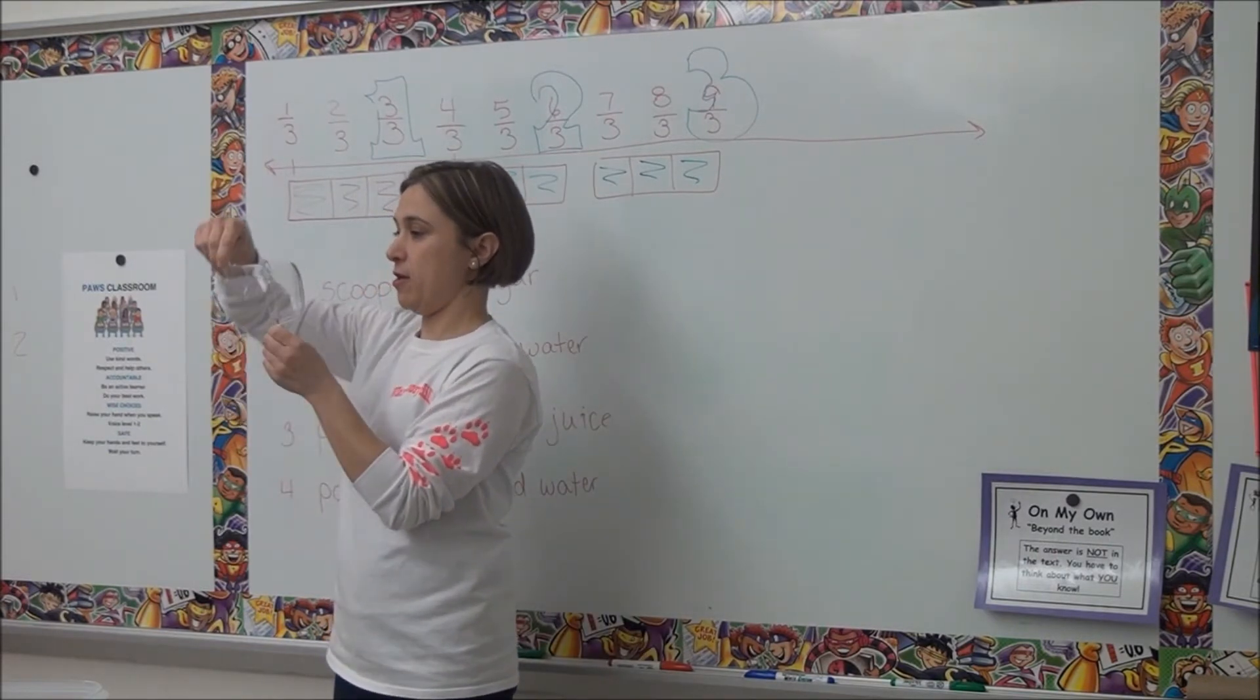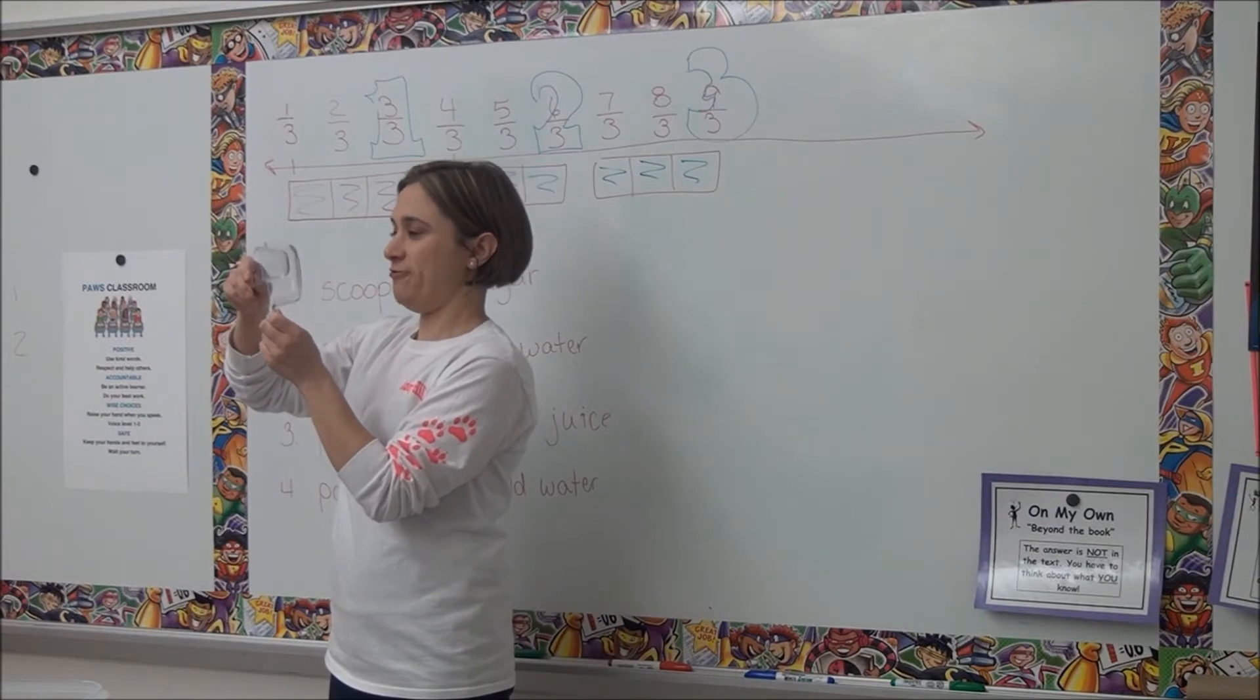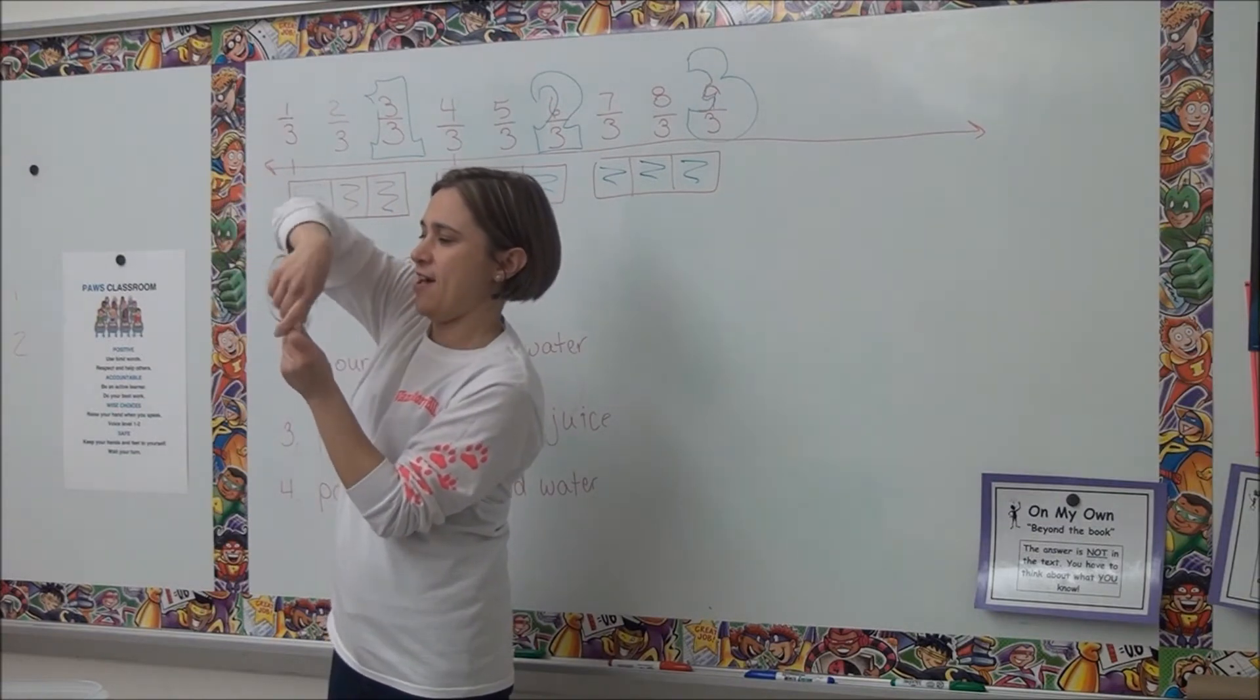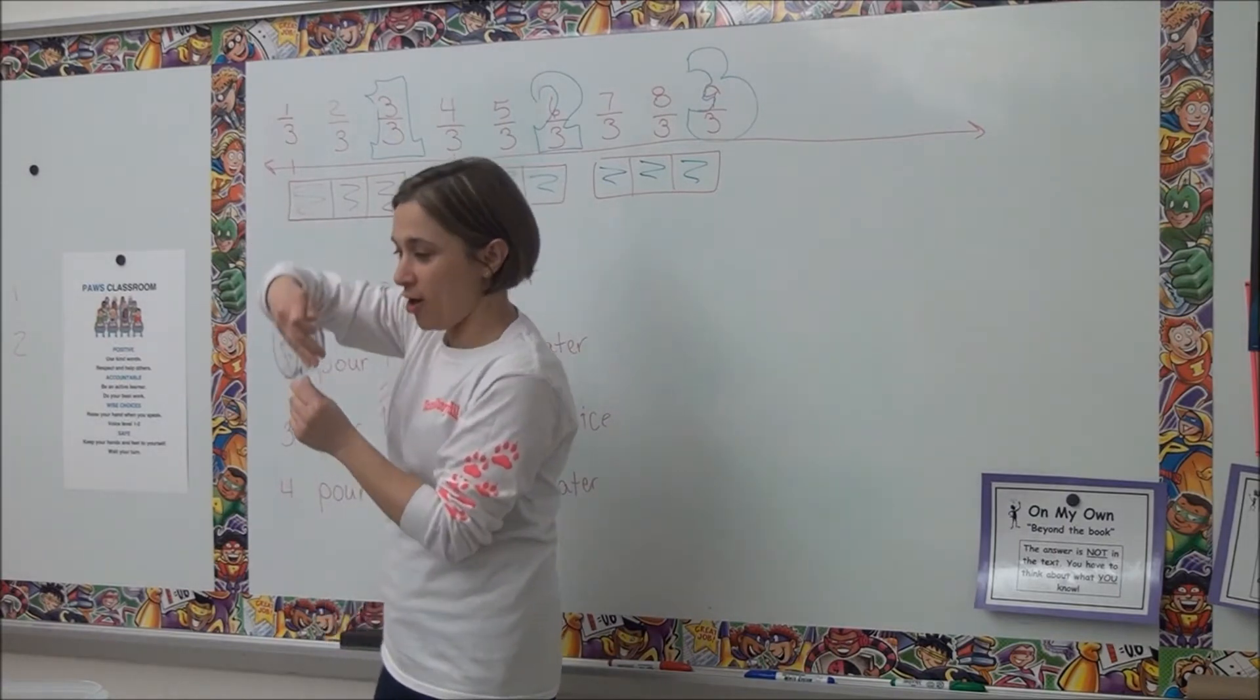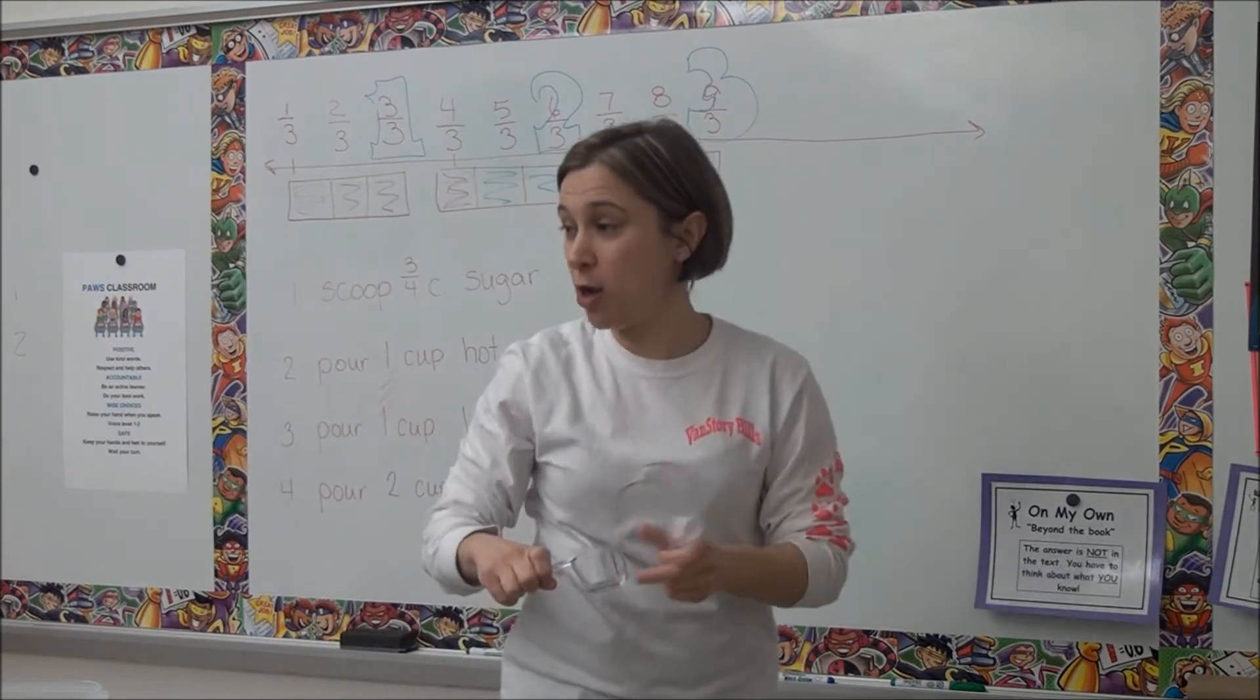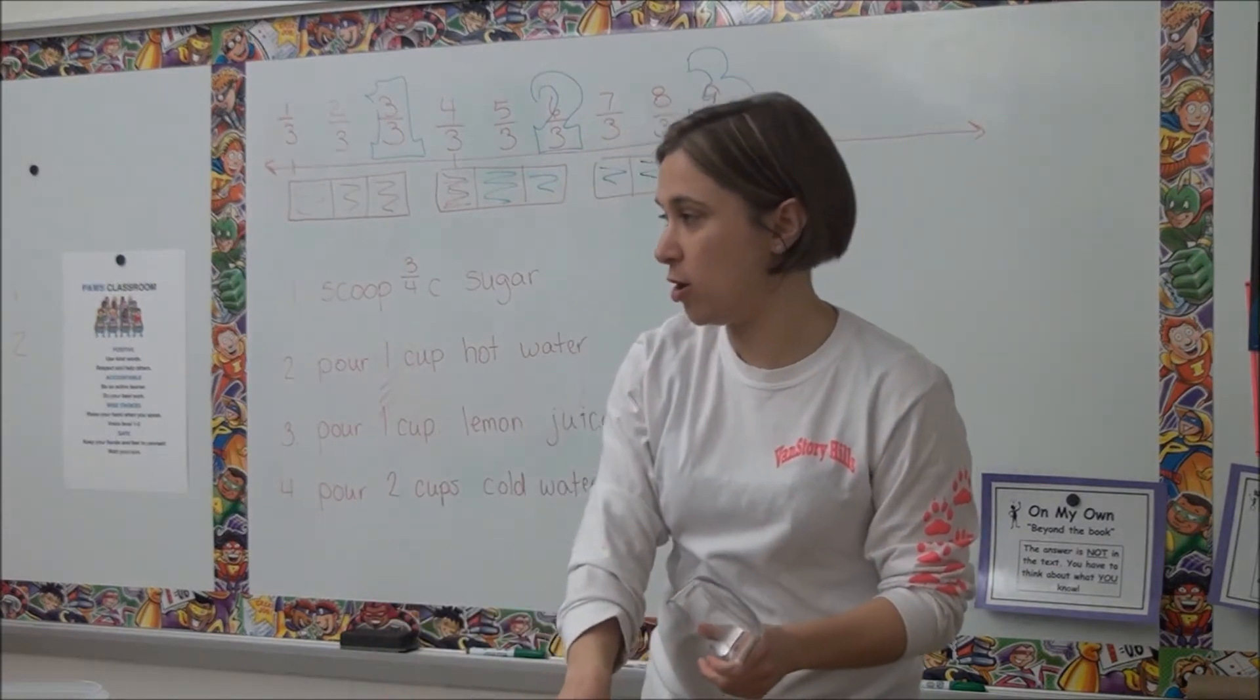So one fourth. Two fourths. Three fourths. Four fourths. Or what else can we call four fourths? One whole. One whole. Four fourths would be equal to one whole.